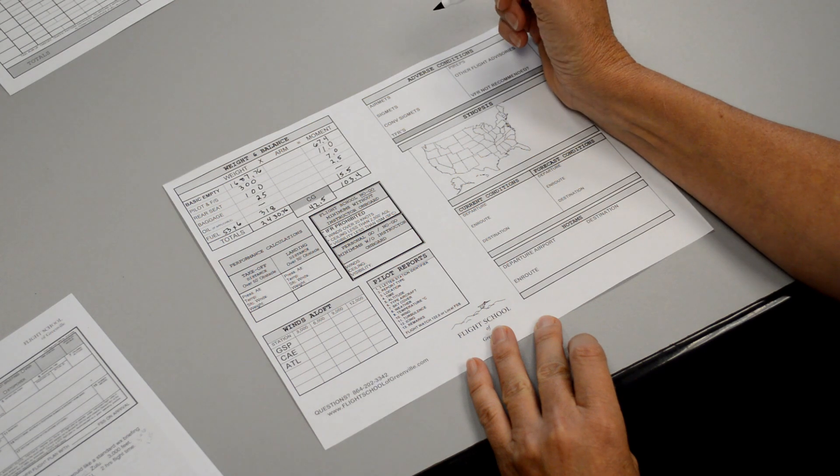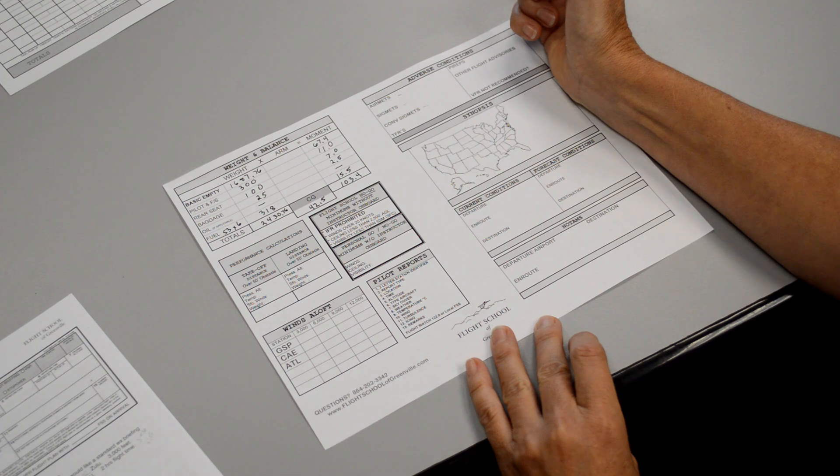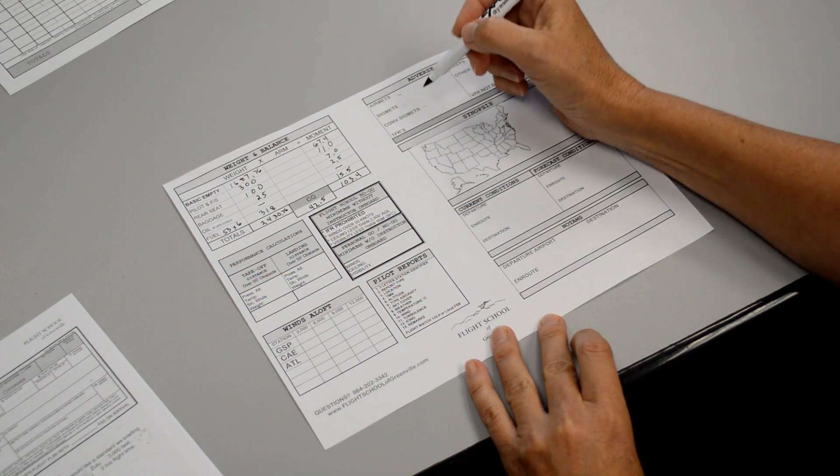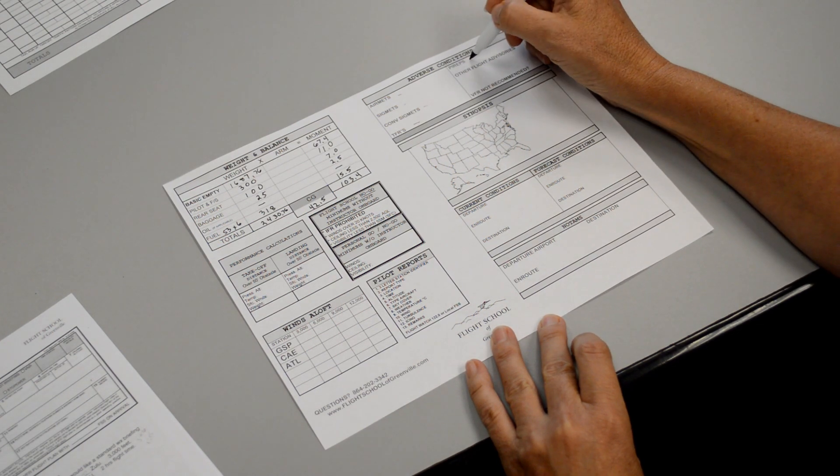Adverse conditions. It doesn't look like there's any airmets, sigmets, or convective sigmets along your route today. As for TFRs, I don't see any TFRs out there either. And no PIREPs along your route.